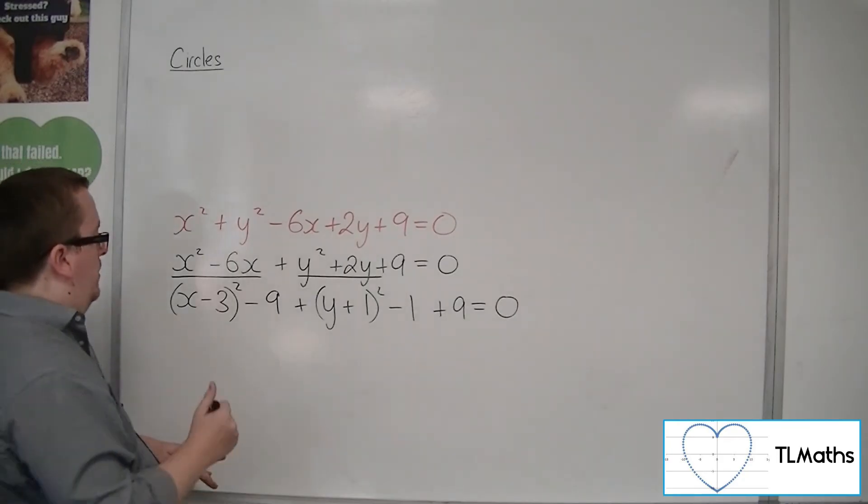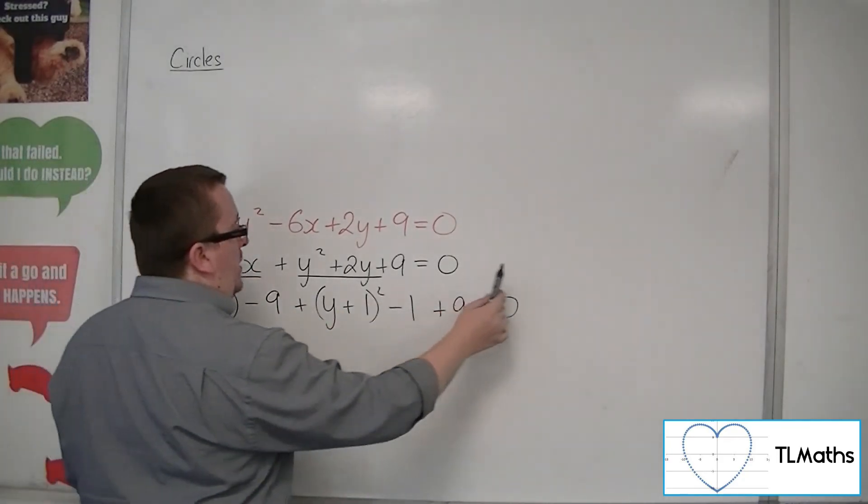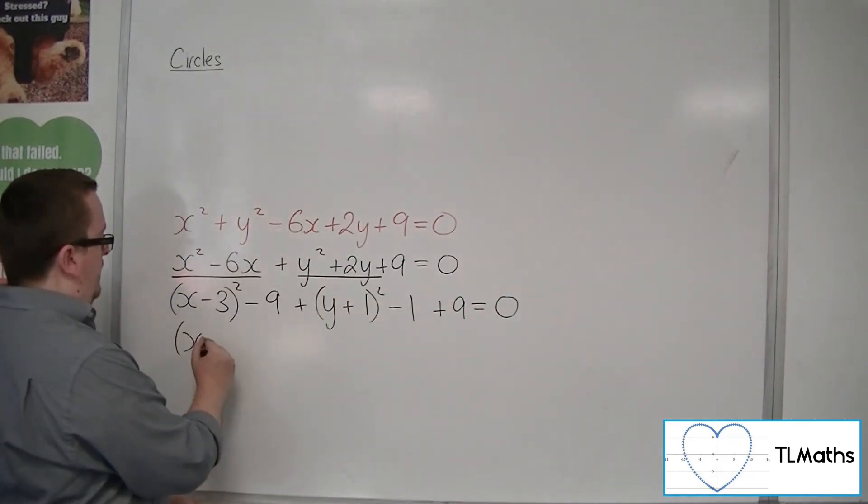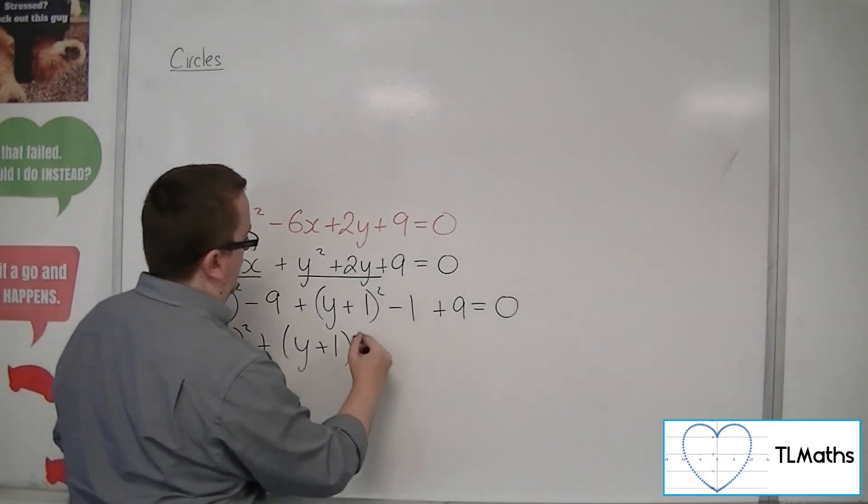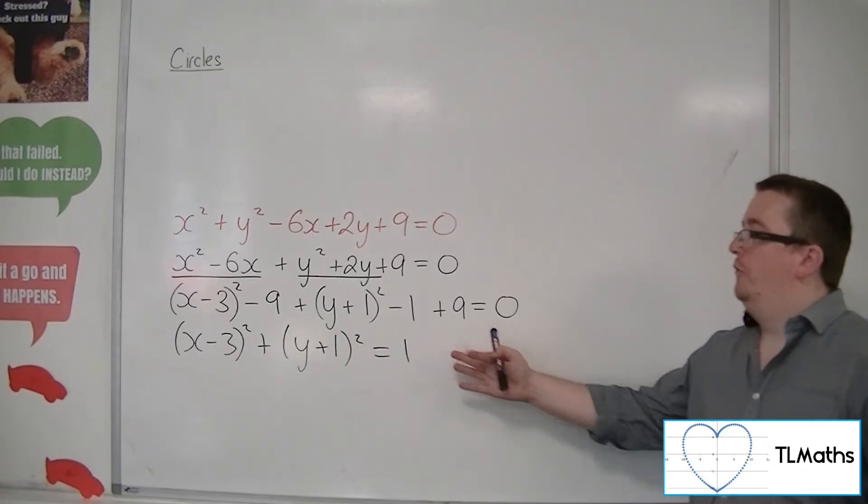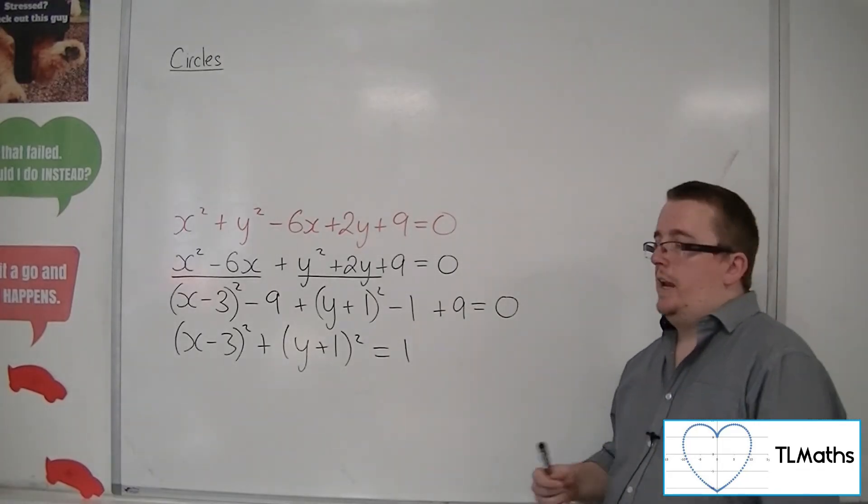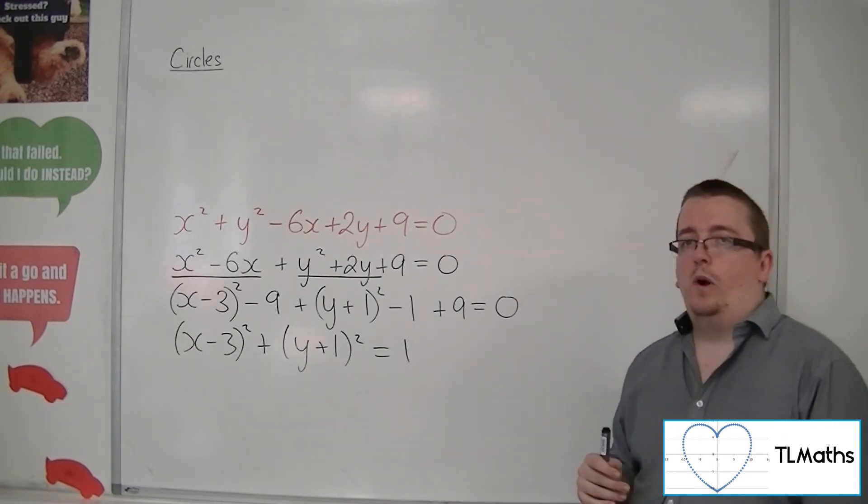Now that minus 9 and that 9 cancel, and that minus 1 can be taken over to the other side and become positive 1. I return to the general form that I need in order to read off that the center's at 3, minus 1 and the radius is 1.